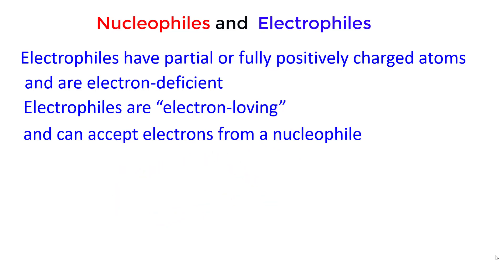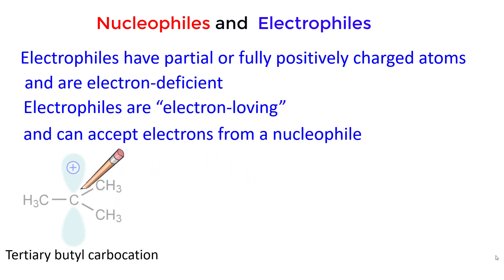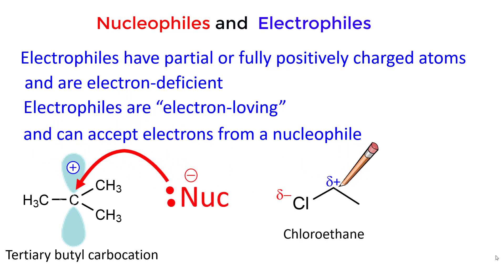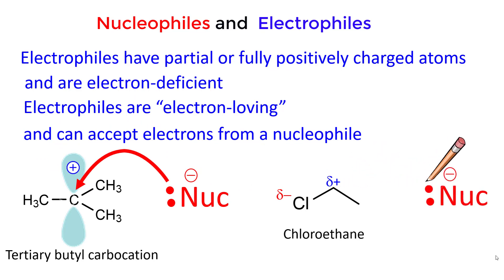Electrophiles can have a full positive charge, as with the tertiary butyl carbocation. Or neutral, with a partial positive charge, as with chloroethane.